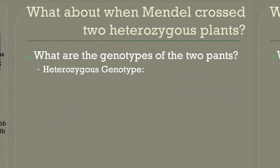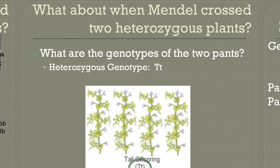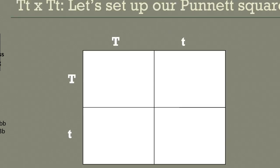Now let's think about what will happen if we cross two of the heterozygous plants. Remember, heterozygous means different — hetero means different — so this is when the genotypes have two different alleles. For example, if there's a big T and a small t, that's heterozygous. So let's see what happens when we cross two heterozygous pea plants. We're going to draw our Punnett square again. This time we'll have our two heterozygous parents: big T, small t for one parent on the top, and big T, small t on the side for the other parent.